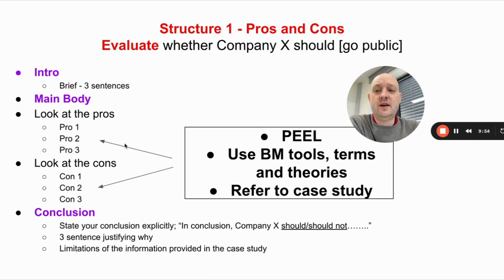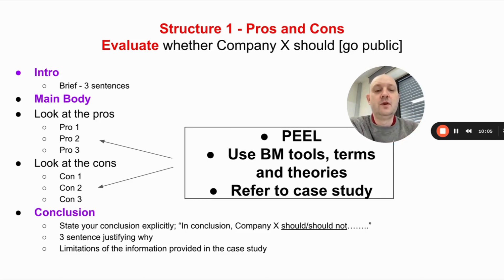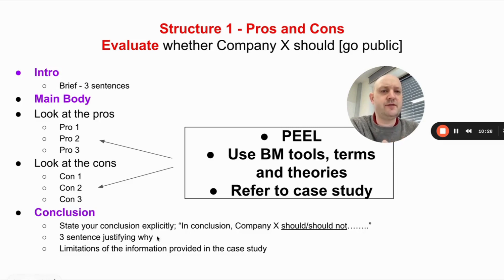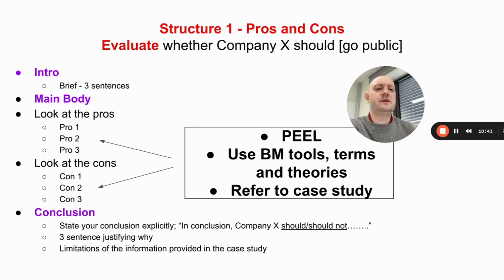For all six paragraphs, PEEL each one — write a little paragraph for each pro and each con — using BM tools, terms, and theories, and referring to the case study. In your conclusion, state your conclusion explicitly — they should or should not go public — and justify why. At the end, include a couple of sentences on the limitations of the information provided in the case study, noting missing information or potential bias.